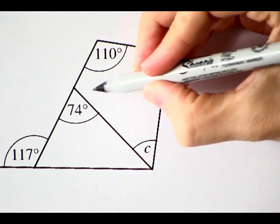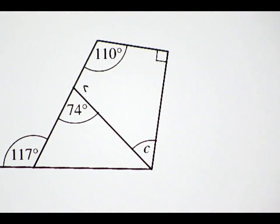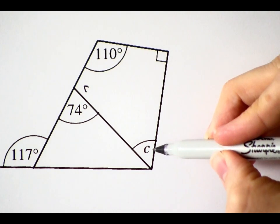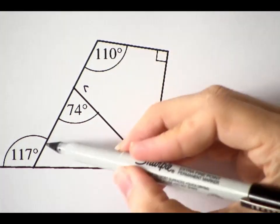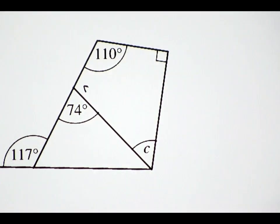Well, if I knew this angle, let's call it R, then I could use the angle sum for the quadrilateral to work out C. And R is on a straight line with this 74 degrees, so R must be 106 degrees.